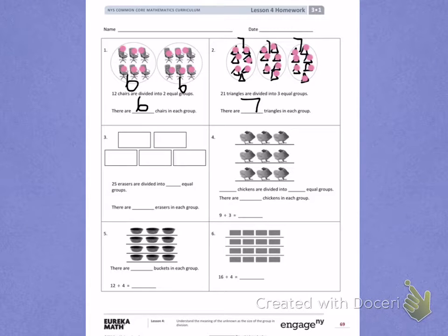Number 3. 25 erasers are divided into blank equal groups. There are blank erasers in each group. First, I need to find how many groups there are. I can see that I have 1, 2, 3, 4, 5 equal groups.